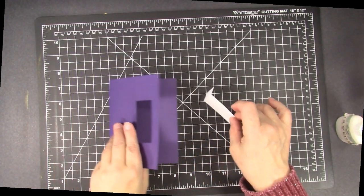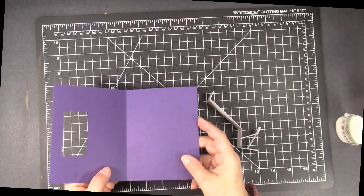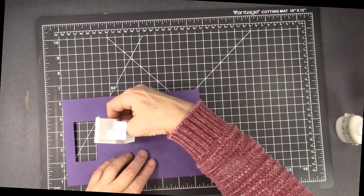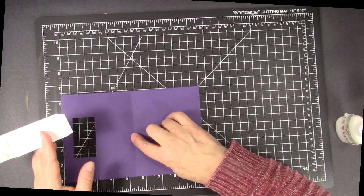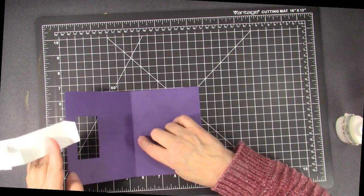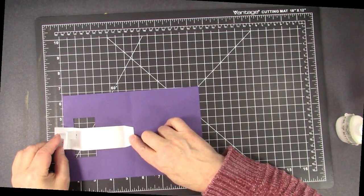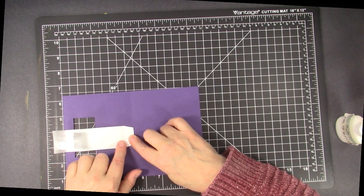And then you're going to take, I have an A2 card base here, and we're going to attach this piece in the center just to the left of the fold, and in this case we want what is attached here to show through this window. So you're going to center it there.